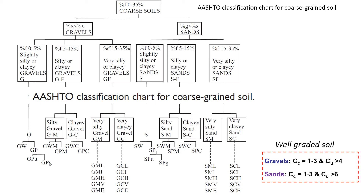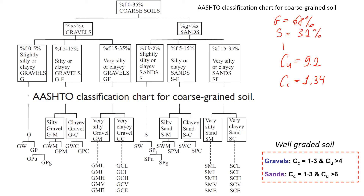Let's write down all the information we know. Coefficient of uniformity Cu is 9.2. Coefficient of curvature Cc is 1.34. The amount of each fraction: gravel is about 68%, sand is about 31%, and fines is about 1%. Altogether these should sum to 100% — just make sure it checks out.